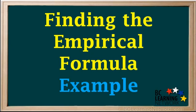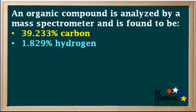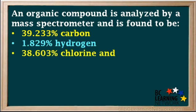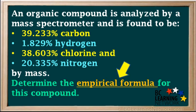In this example, we'll learn what an empirical formula is and how we can find it given the percent masses of elements in a compound. An organic compound is analyzed by a mass spectrometer and found to be 39.233% carbon, 1.829% hydrogen, 38.603% chlorine, and 20.335% nitrogen by mass. Determine the empirical formula for this compound.